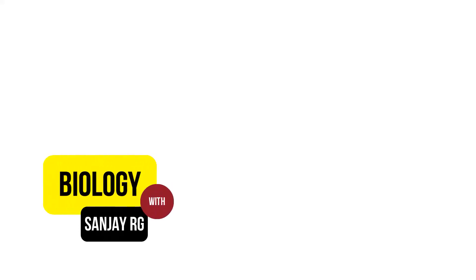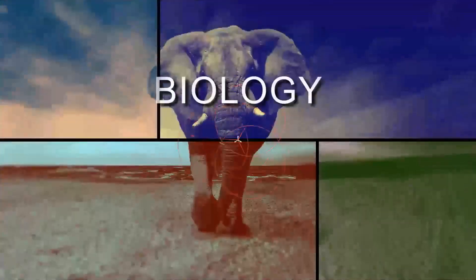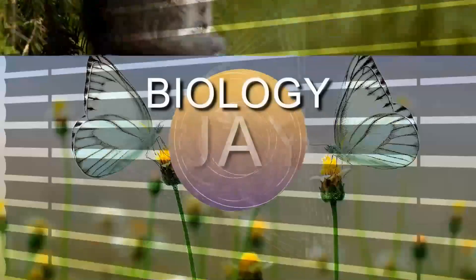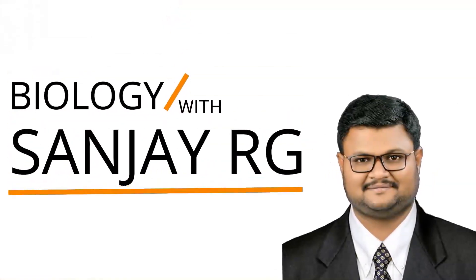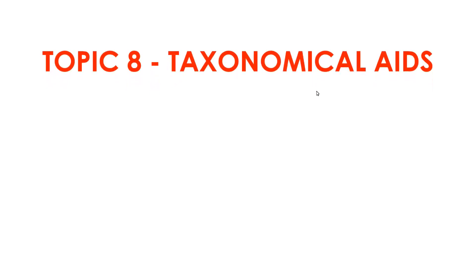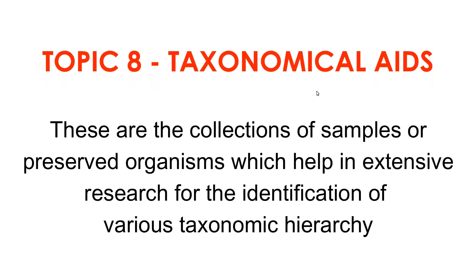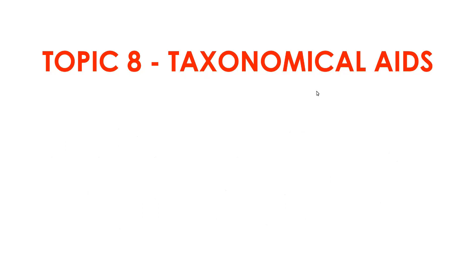Hello students, welcome to my online biology classes — Biology with Sanjay RG. Today we have reached the end of this chapter called 'The Living World' and the topic name is Taxonomical Aids. The definition of taxonomical aids is very simple: these are collections of samples or specimens which are helpful for researchers to do their botany or zoological work, helping in understanding the taxonomical hierarchy of a variety of organisms.